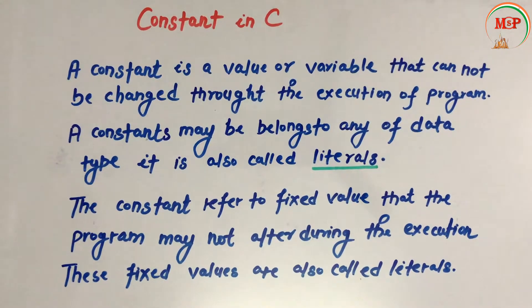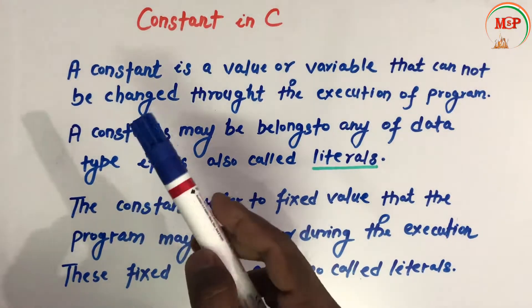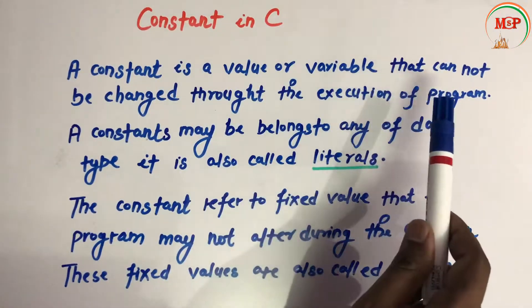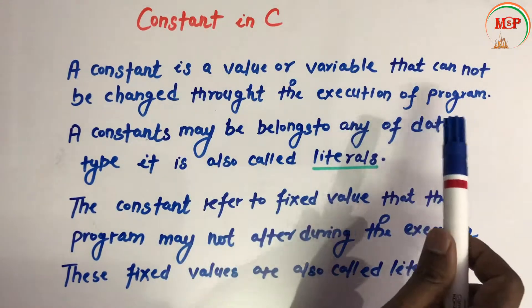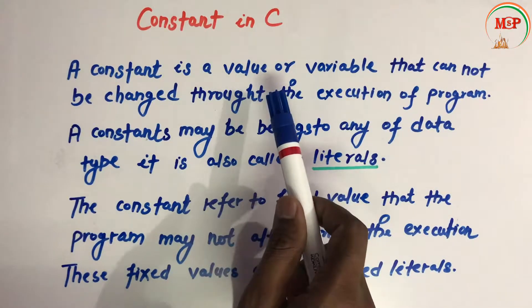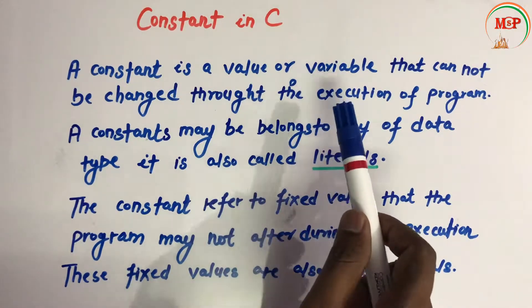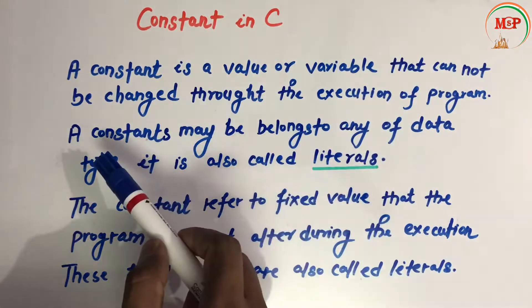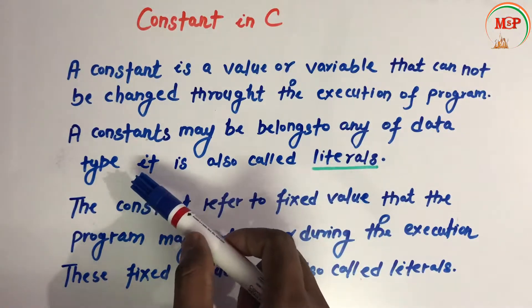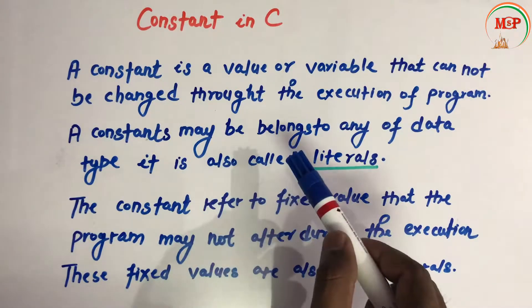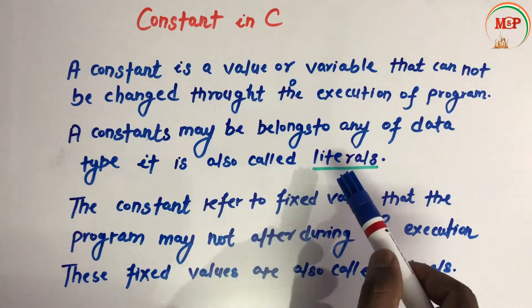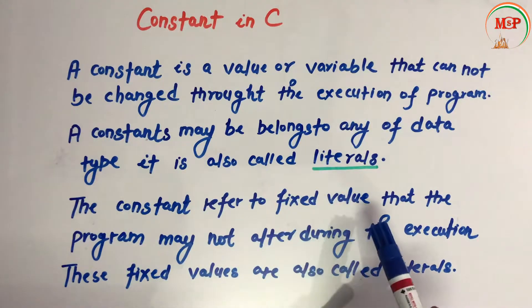Hello friends, in this video we are going to study about the topic constants in C. A constant is a value or variable that cannot be changed throughout the execution of the program. A constant may belong to any data type, and it is also called literals.